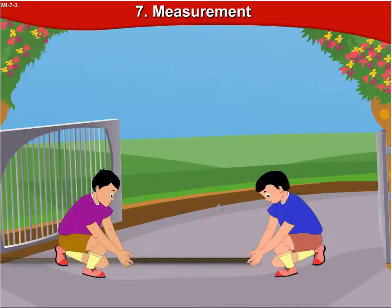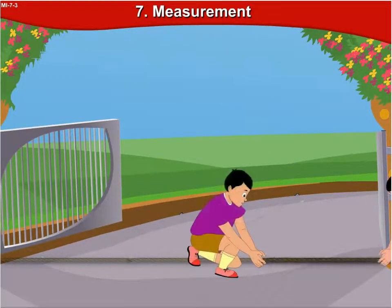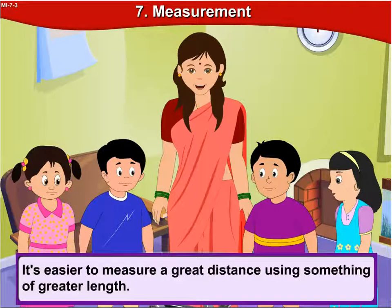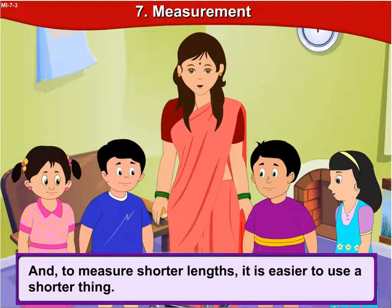We can see that the distance between the gate posts is equal to three strings. You're right, Tony. It's easier to measure a great distance using something of greater length, and to measure shorter lengths, it is easier to use a shorter thing.